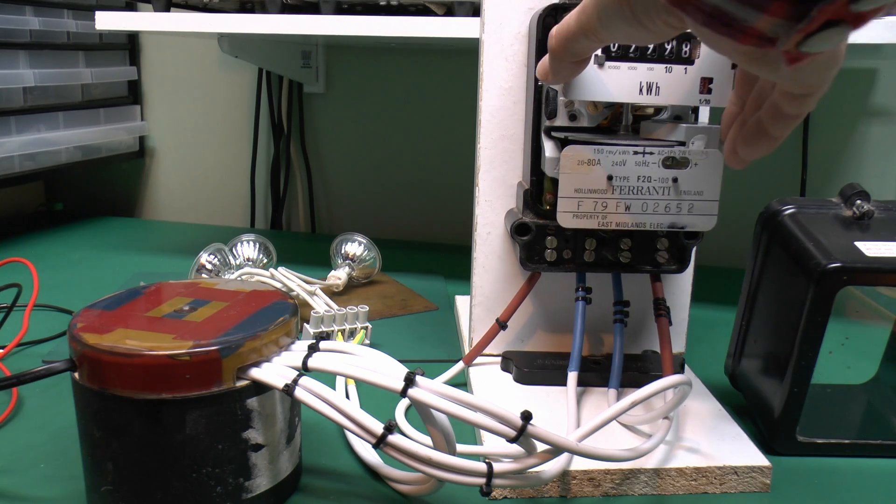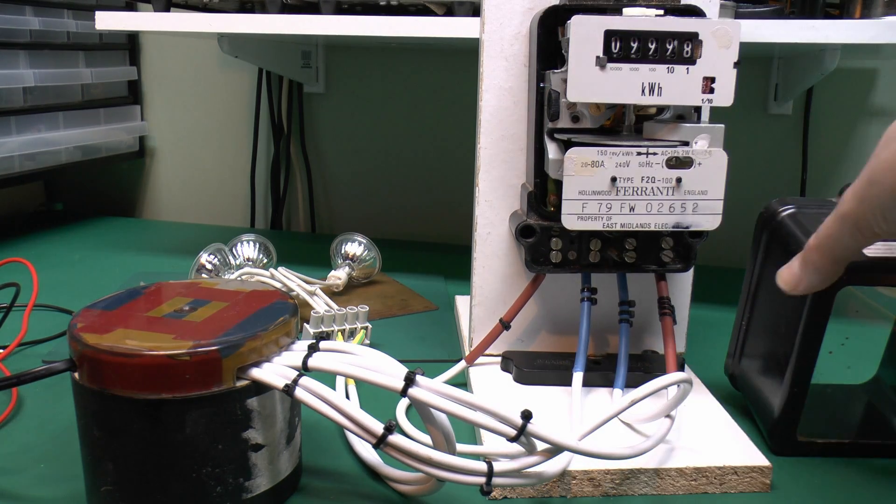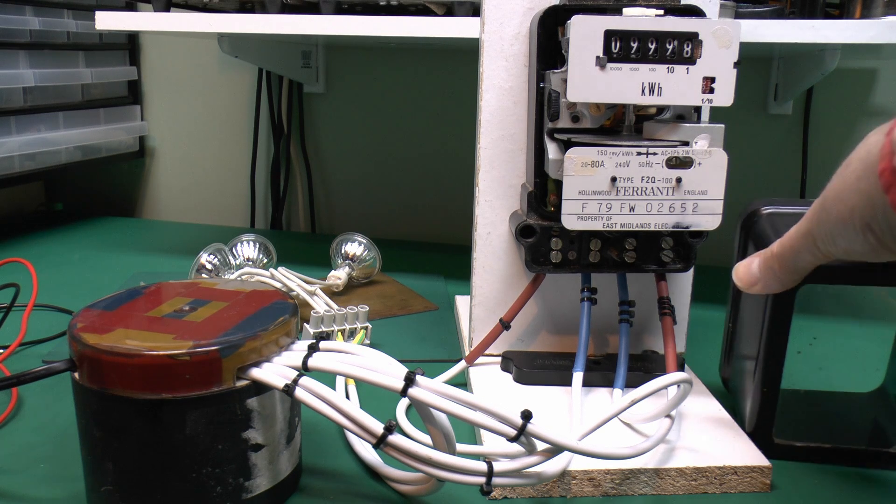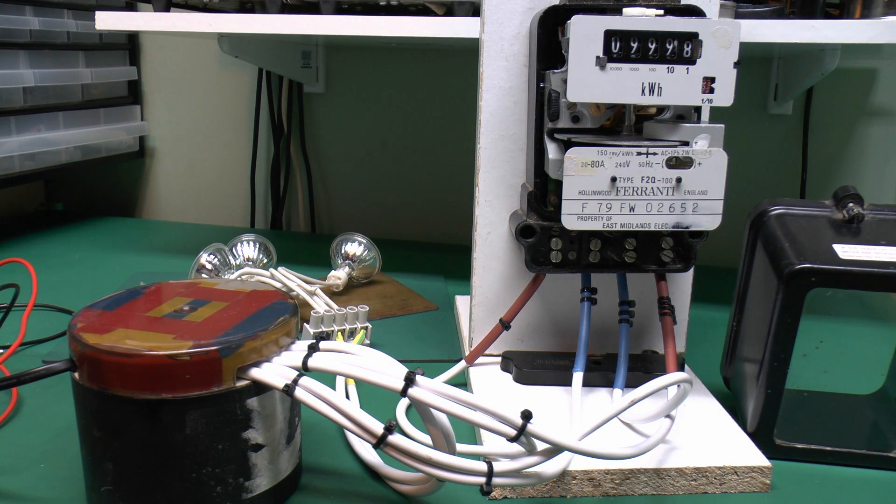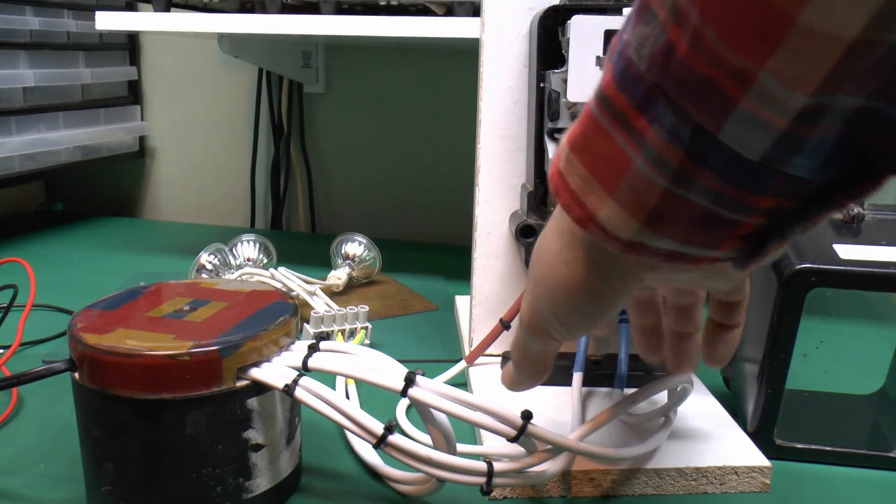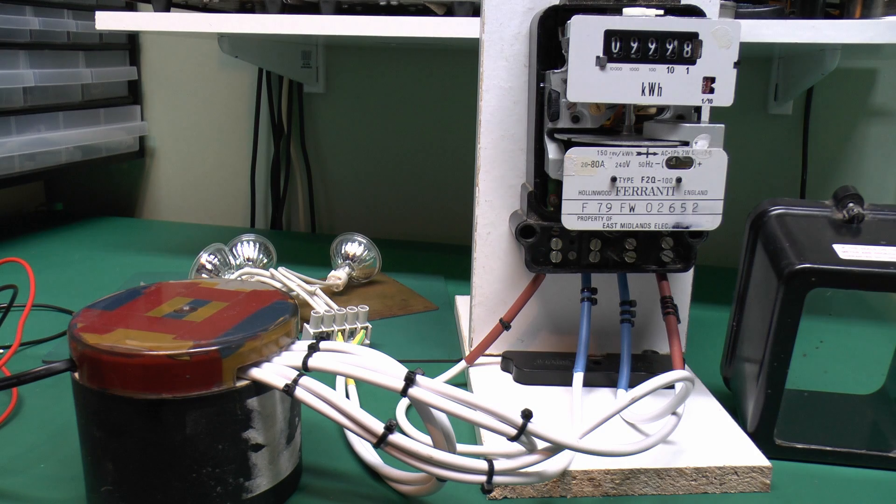Right, here is the setup. I just hooked the meter on this little stand. I have taken the front cover off because the seals were missing and it has obviously been opened hundreds of times before so that won't make any difference to anybody. I have just got the wires going in here, the live, neutral, neutral and live in that order.